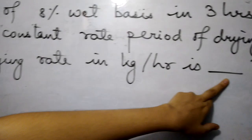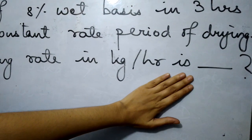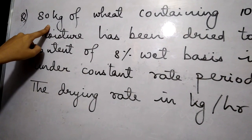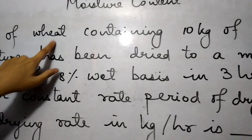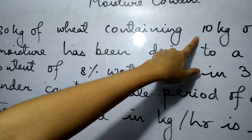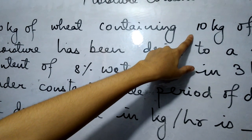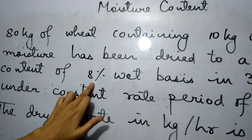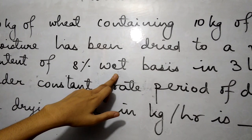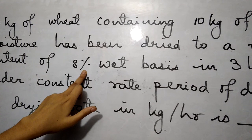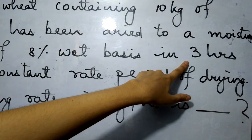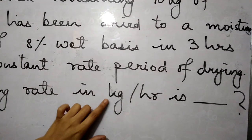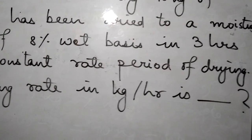Look at the question carefully. The final moisture content is given as 8% on wet basis — it is not given in kg. You need to find the final water weight in kg. The drying was done for 3 hours under constant rate period of drying. The unit of drying rate is kg per hour, meaning amount of water removed divided by time.